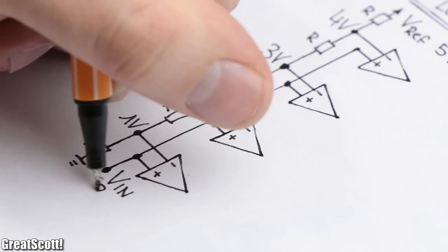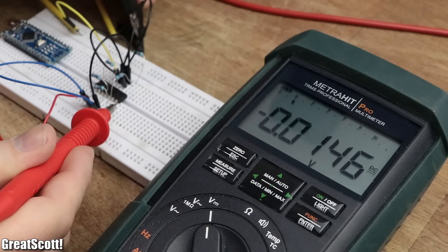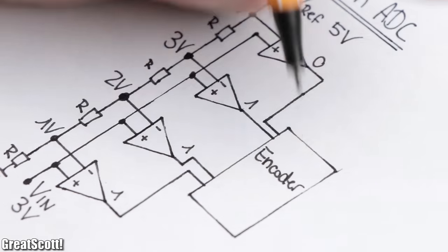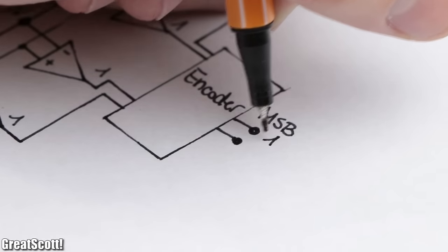And thus by applying the input voltage of 3 volts, we get our different comparator outputs, which then enter an encoder with a truth table to finally give us a 2-bit value in the end.